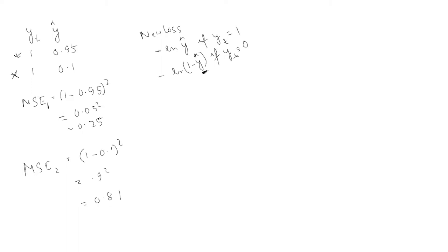Now there is a new loss function called the Negative Log Likelihood (NLL). It is defined as: minus ln(y_hat) if y_target equals 1, and minus ln(1 - y_hat) if y_target equals 0. This means if the target is 1, take the log of the probability of belonging to class 1; if the target is 0, take the log of the probability of belonging to class 0, which is 1 minus y_hat.